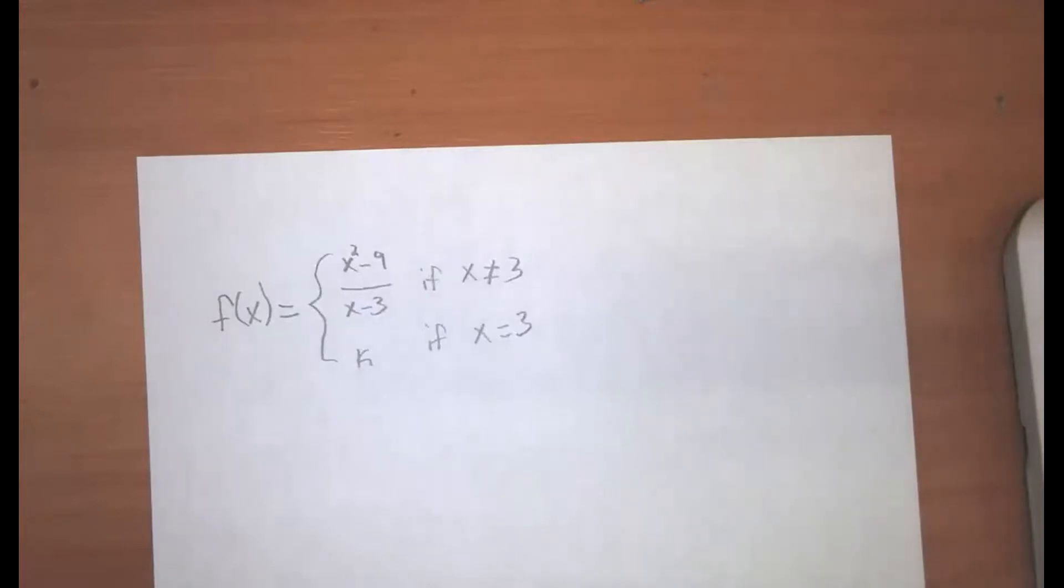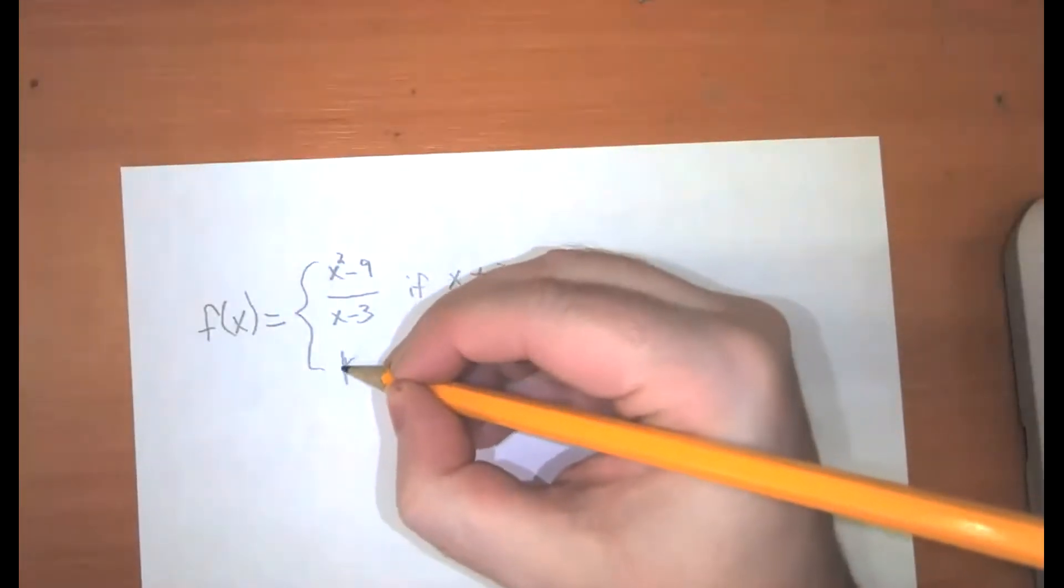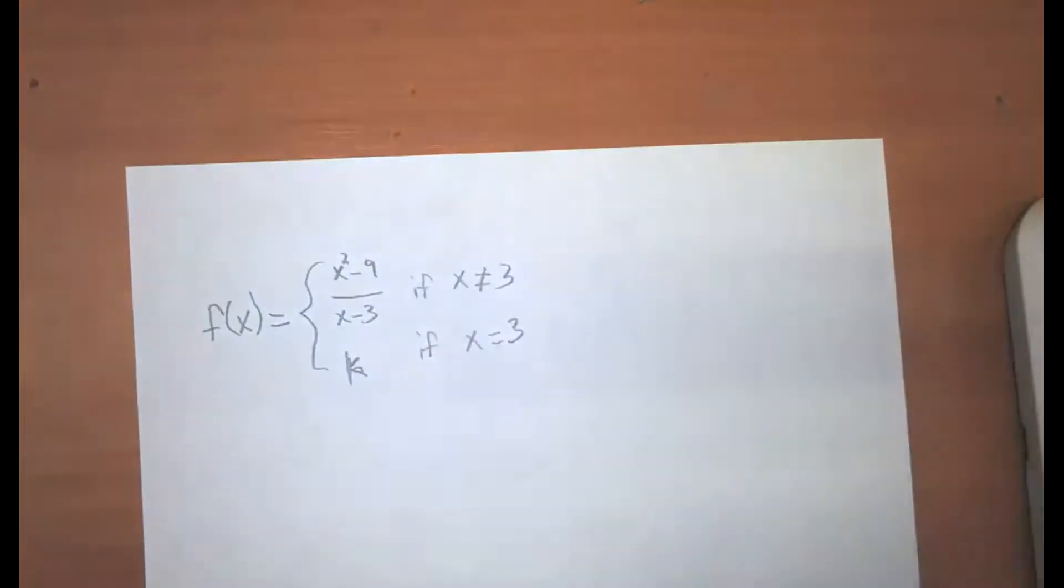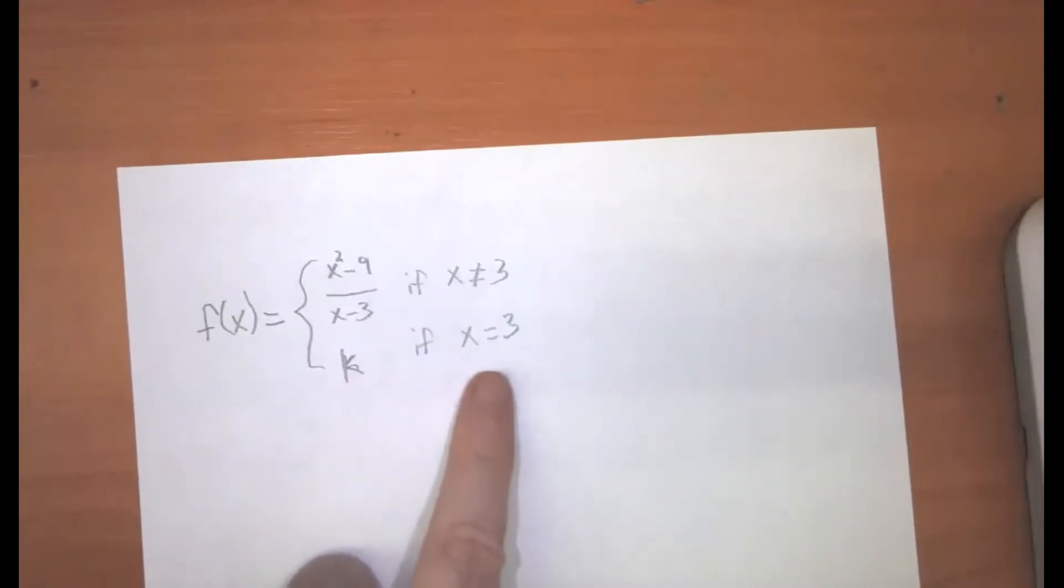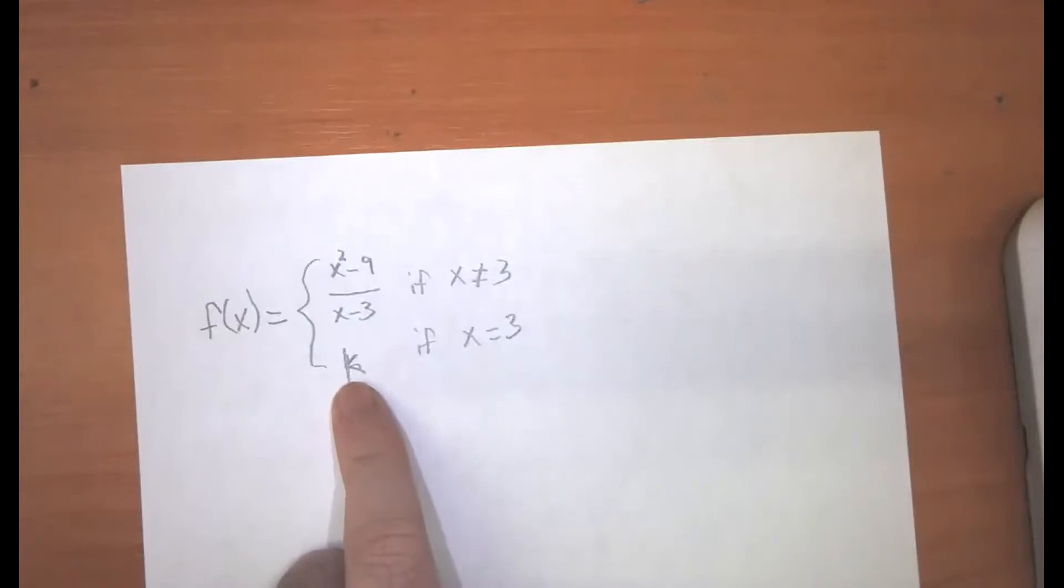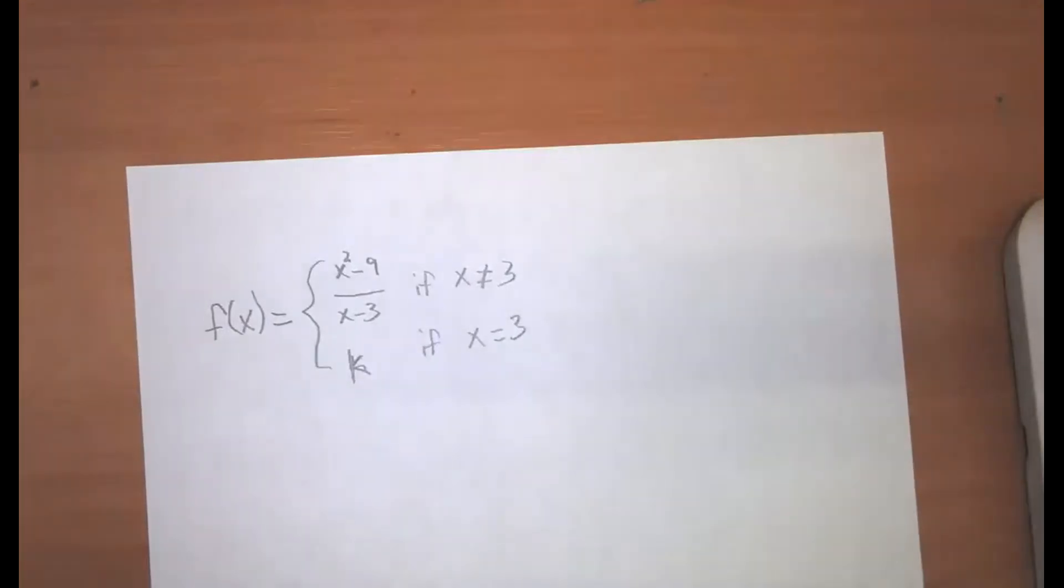I've got this piecewise function defined with f, that f of x is equal to x squared minus 9 over x minus 3 if x is not equal to 3. And notice that if we put 3 in here, that would be 0 over 0. So that wouldn't be a logical definition. And so if x is equal to 3, I'm going to set this equal to k. And the question is, what value of k could we assign to this function in such a way that the function is continuous at 3?